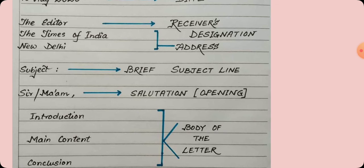Remember that the spelling of ma'am comes from M-A-D-A-M. Just as you omit the D, you replace it with an apostrophe. So the spelling becomes M-A apostrophe A-M.